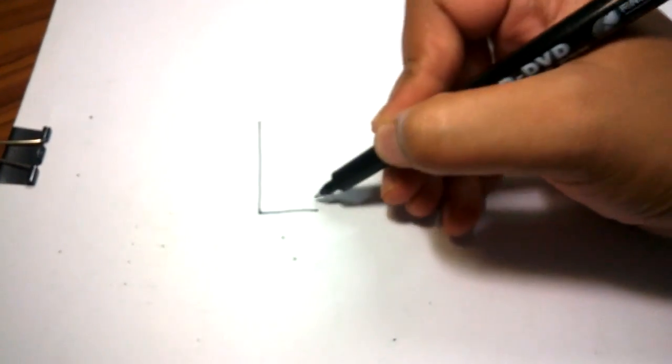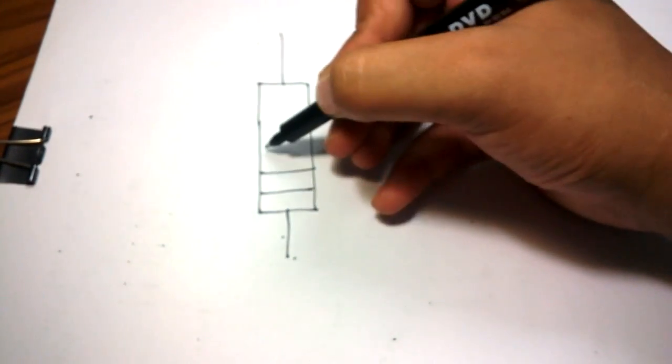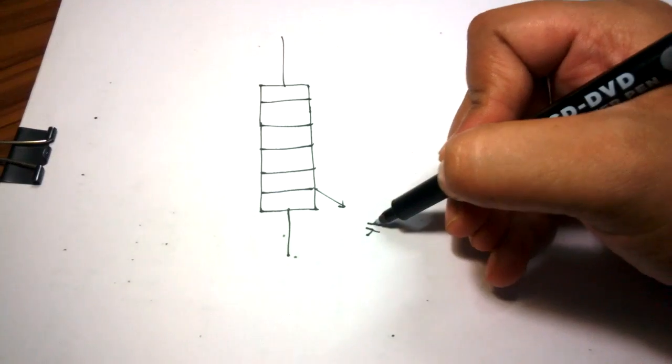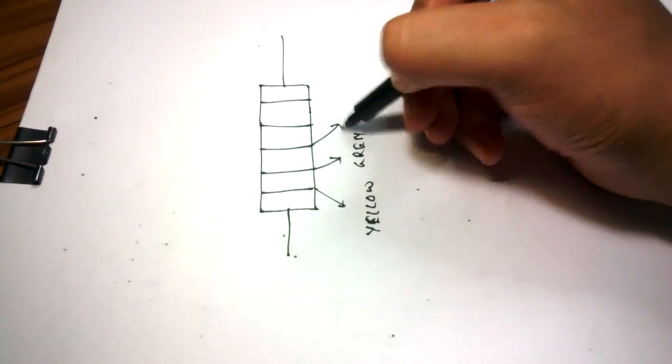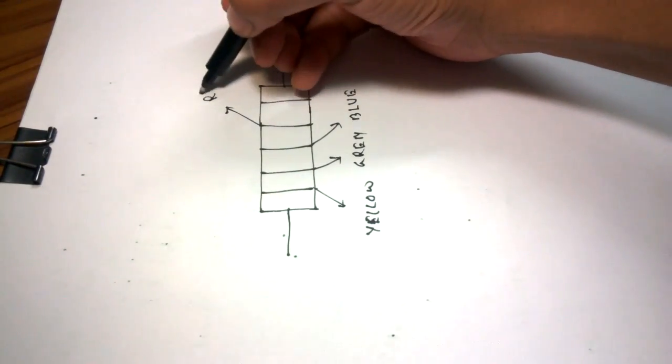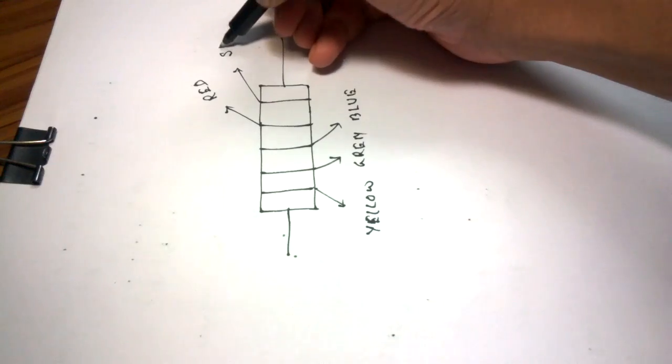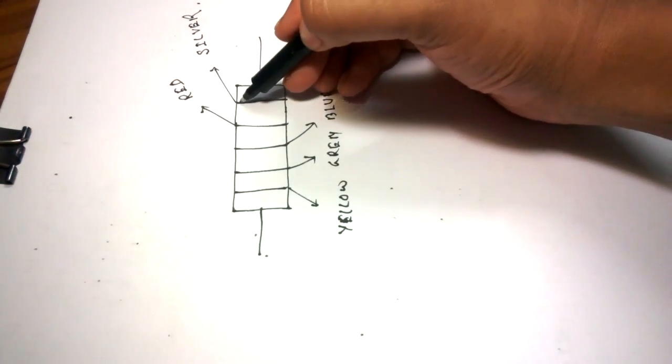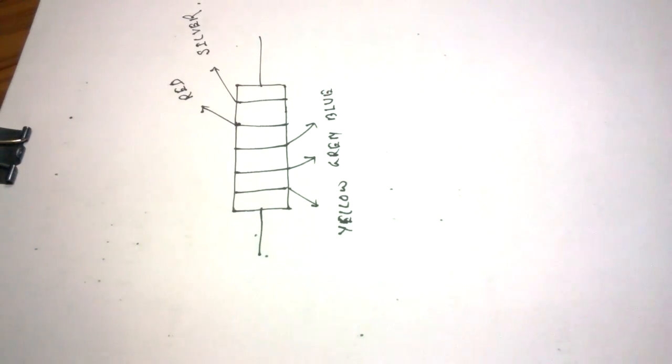Now, in case of 5 bands: 1, 2, 3, 4, 5. Say, first band, yellow, second band, green, third band, say, blue, multiplier, say, red. The tolerance is, say, silver. So, here we have the tolerance, multiplier, and the rest, the rest three are the significant values.